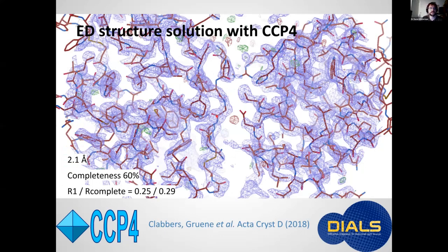So after data processing of that case, we solved the structure by molecular placement with standard CCP4 tools, using the keywords for electron scattering in phaser and REFMAC. And here we get a view of 2.1 angstrom electrostatic potential map. It doesn't look so different from electron density maps really at that resolution. The overall completeness of this data set is only 60%, but that's largely because of the limited tilt range in the microscope, which was about 40 degrees.